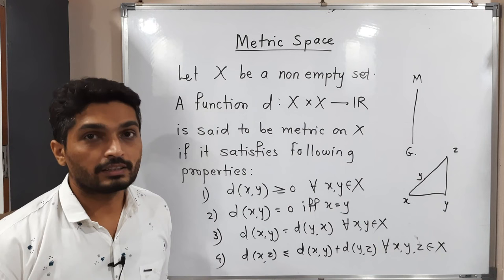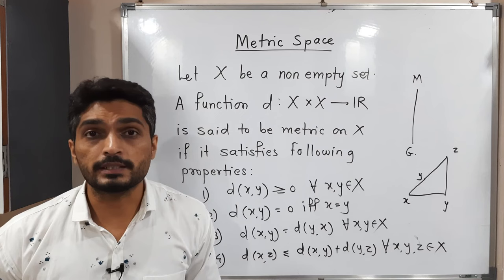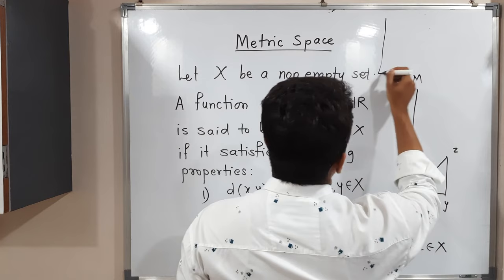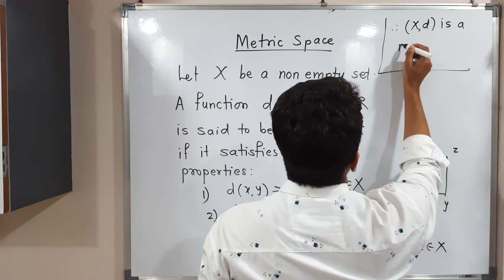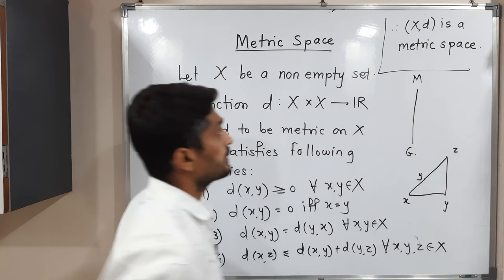So if any function D satisfies all these four properties, then we declare D is a metric on X. In other words, we can say (X, D) is a metric space. This is the definition of a metric space.